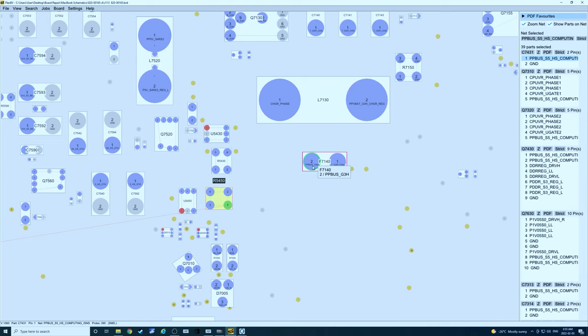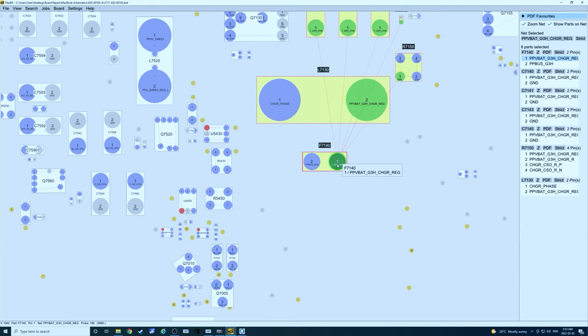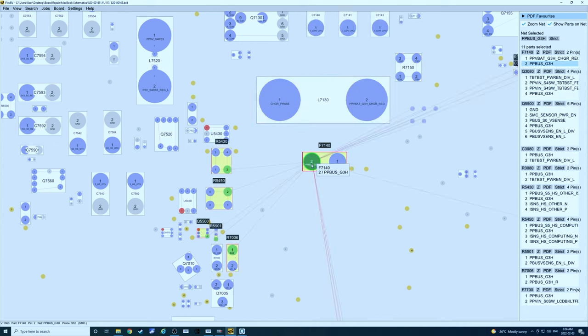The next thing we checked was the fuse itself because this is actually where PP bus G3 hot is sent to the rest of the system. It comes from here and we noticed that on this side of the fuse we had a correct 8.6 volt reading. So we checked the fuse in continuity mode and noticed it was not getting continuity. The fuse was damaged. So we replaced the fuse and that solved the problem.